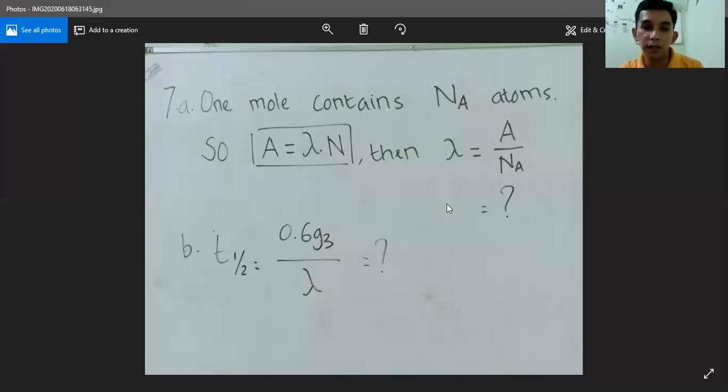For part B, they ask you what is the half-life of this isotope. So the half-life, you just need to use the half-life formula: half-life is equal to 0.693 over the lambda, the decay constant from here.